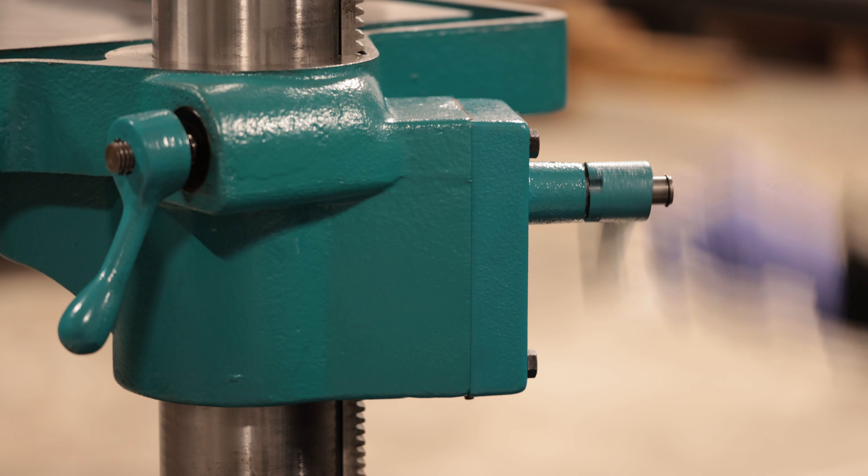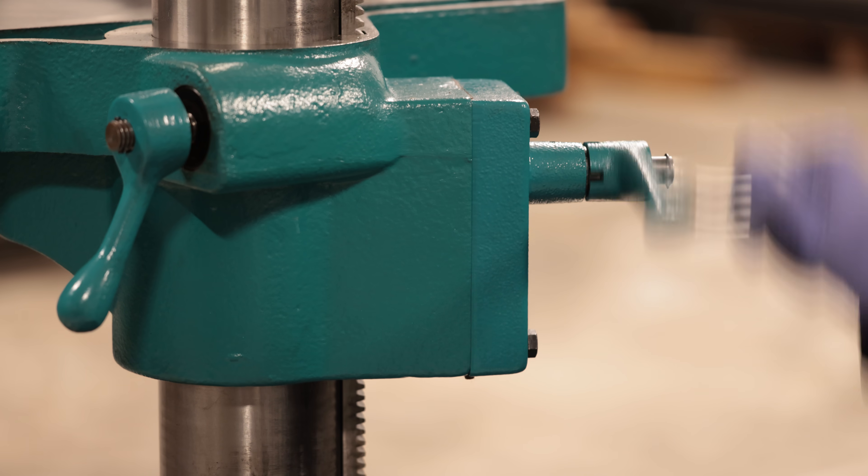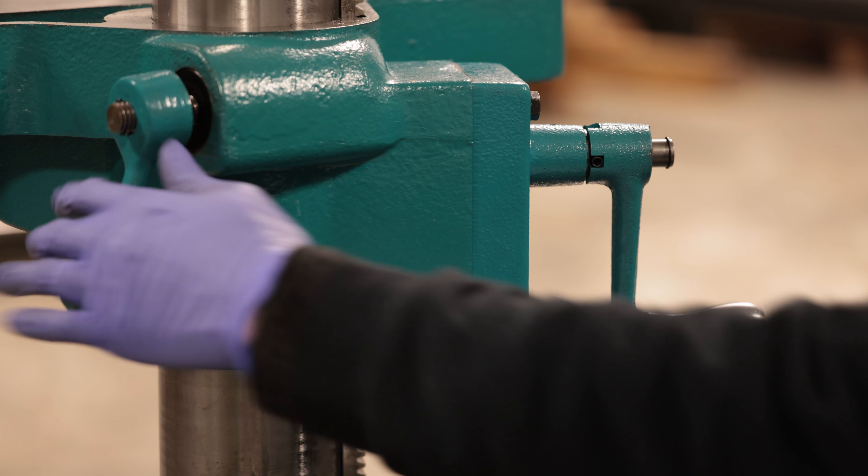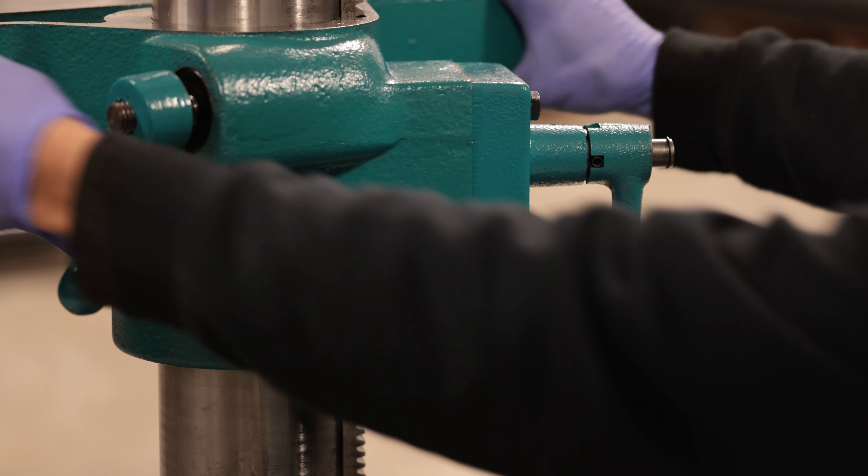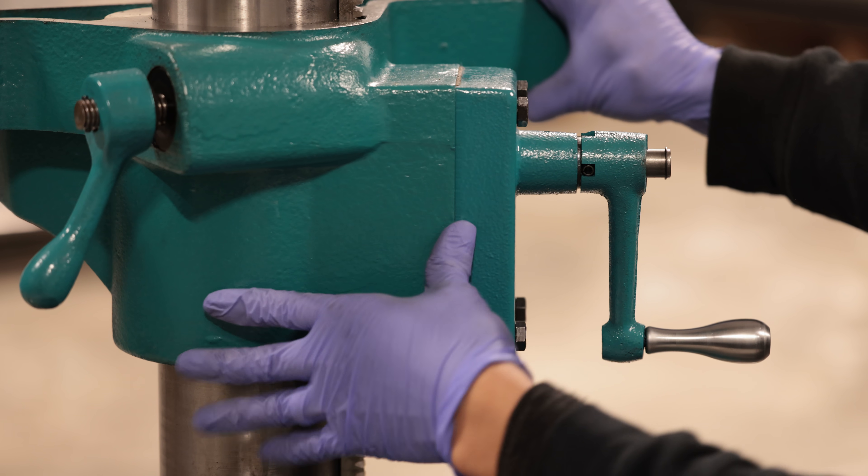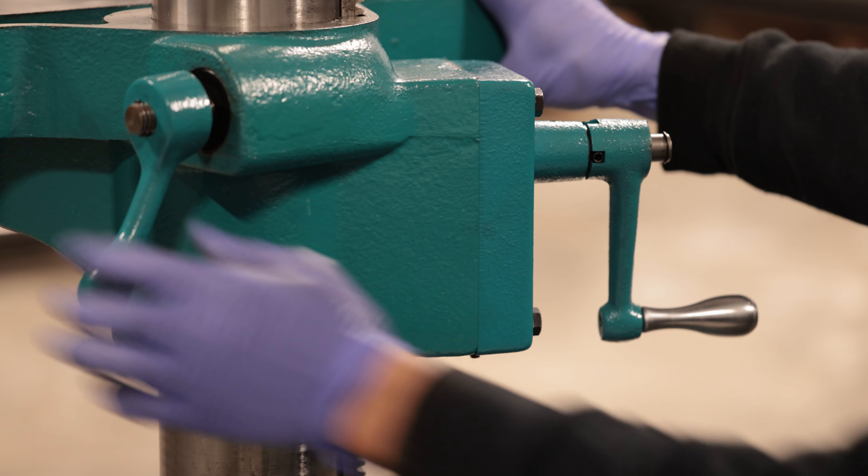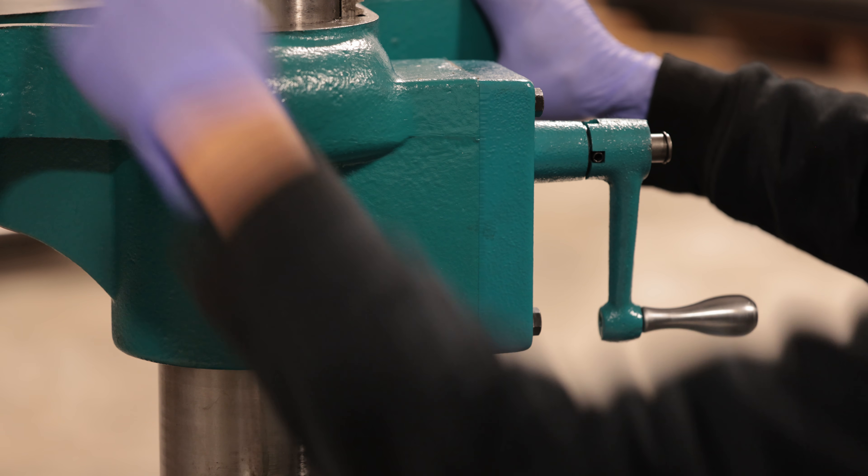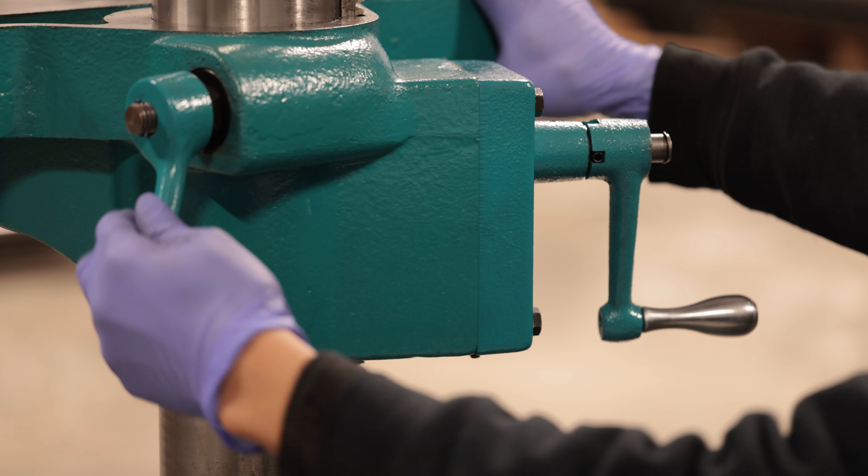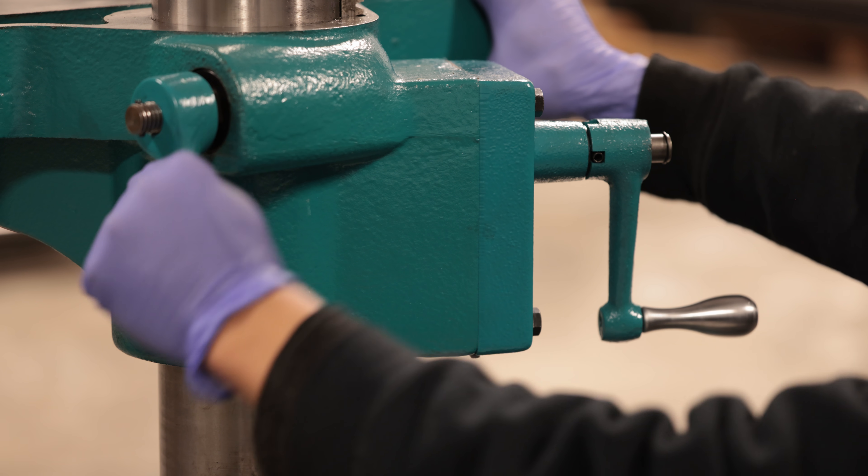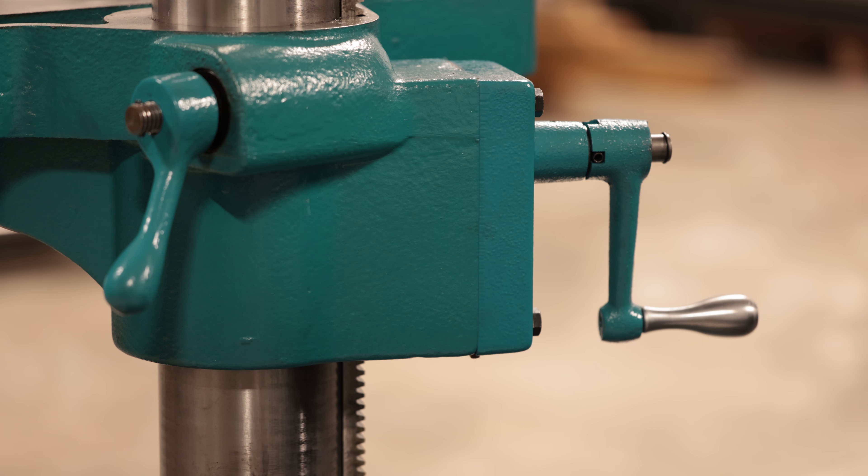The two levers on the back of the table allow it to go down and elevate as well as turn from side to side. It's always important to lock things down to make sure your work doesn't move.